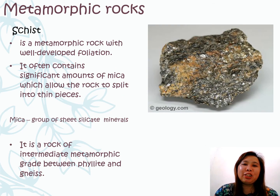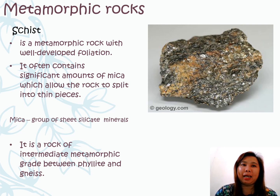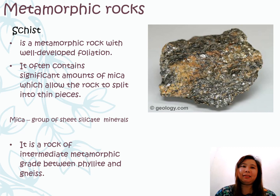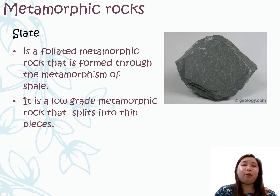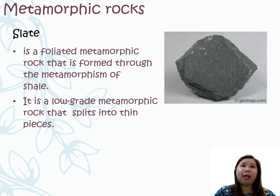Schist is a metamorphic rock that has well-developed foliation. It often contains significant amounts of mica which allow the rock to split into thin pieces. Mica is a group of sheet silicate minerals. This rock is the intermediate metamorphic grade between the phyllite and the gneiss. My last example of metamorphic rock is the slate. The slate is a foliated metamorphic rock produced from the metamorphism of the schist. This kind of rock could be easily broken down into thin flat sheets or pieces.